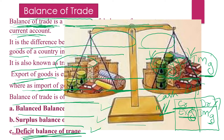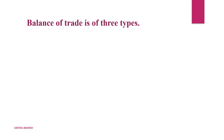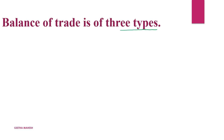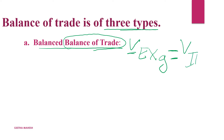Dear students, here you can see in the diagram — one side we have export of goods, another side we have import of goods. We should always try to maintain the balance. Balance of trade is of three types. The first one is balanced balance of trade, where the value of export of goods should be equal to the value of import of goods.